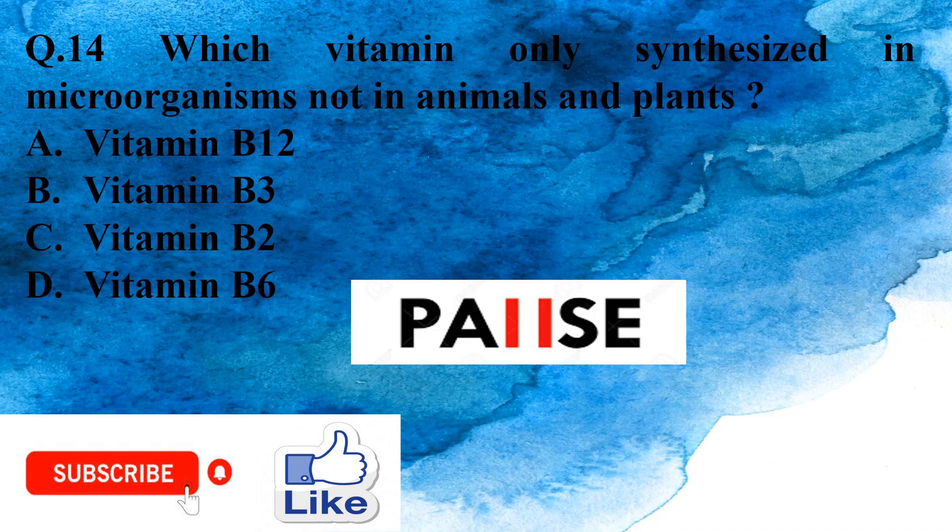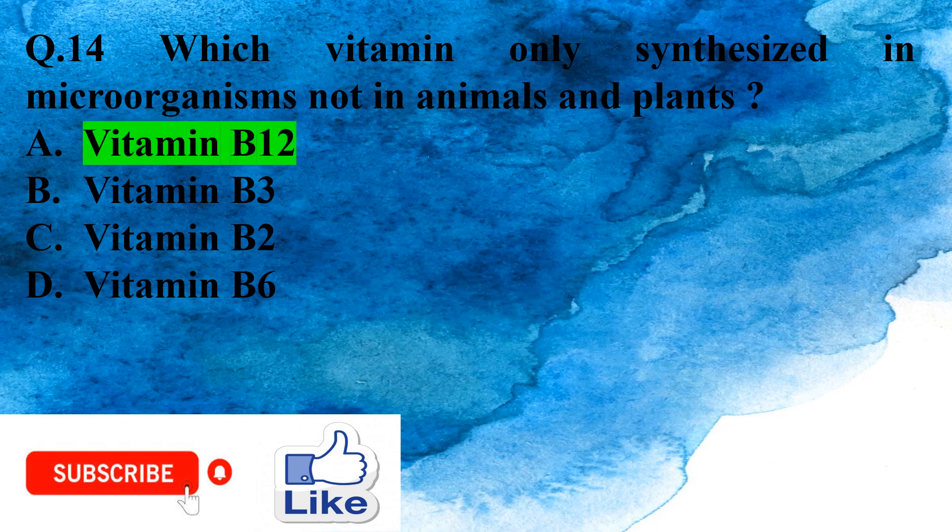Question 14: Which vitamin is only synthesized in microorganisms and not in animals? Option A: Vitamin B12, Option B: Vitamin B3, Option C: Vitamin B2, Option D: Vitamin B6. The right answer is Option A, Vitamin B12.